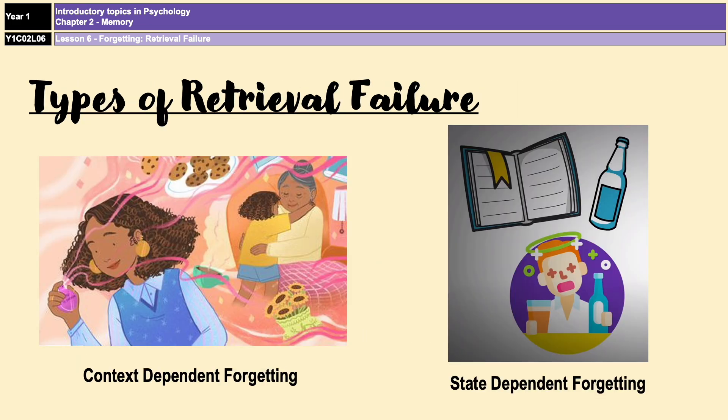Cues can be both internal and external, and that links to the fact that there are two types of retrieval failure you need to know for A-level psychology: context-dependent forgetting and state-dependent forgetting.